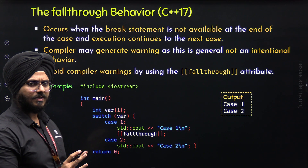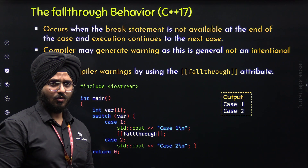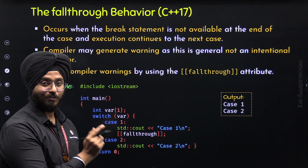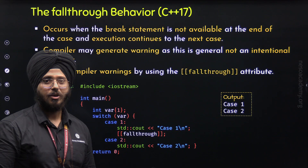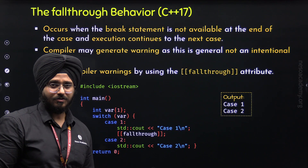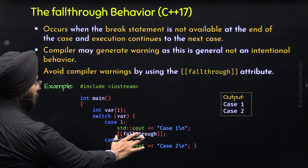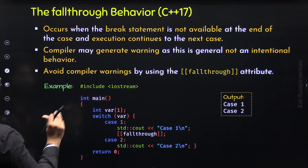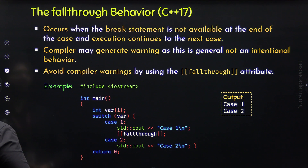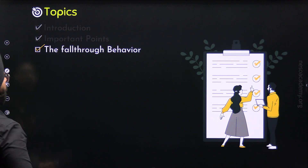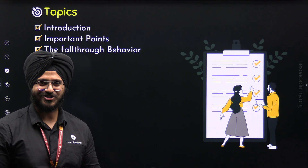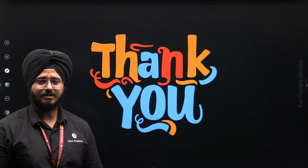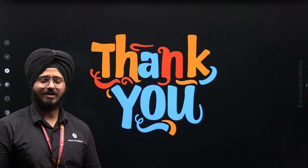I hope this concept is clear to you. One thing to note: after this attribute, you need to add the semicolon — don't miss it. Also, the [[fallthrough]] attribute was introduced in C++17. With this, we have understood the fall-through behavior, and we are done with this topic and this lecture. Thank you for watching, I will see you in the next one.